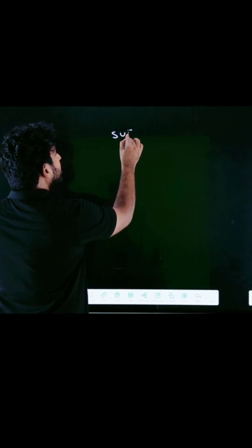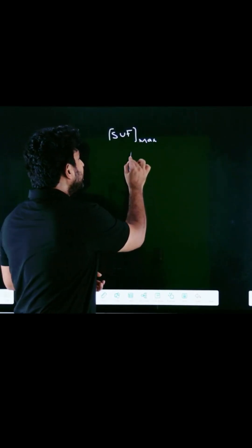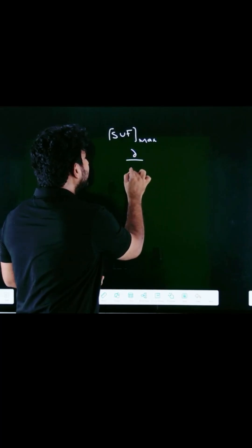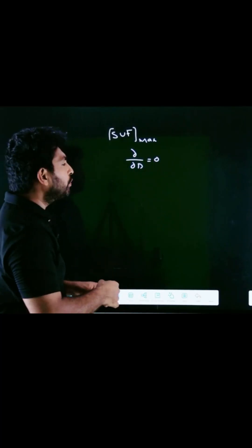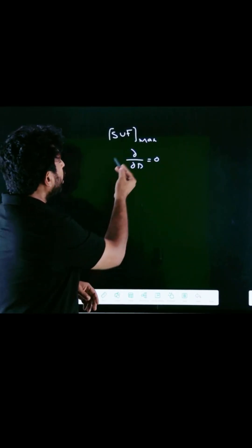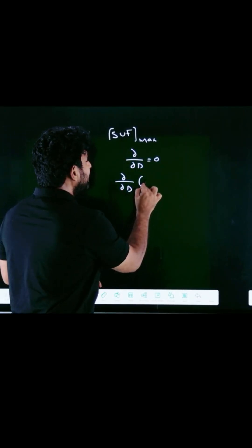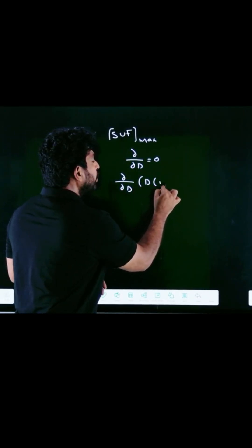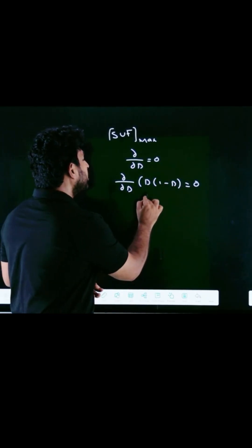To find the maximum switch utilization factor, it is a function of the duty cycle D. Setting the derivative with respect to D equal to zero — that is, d/dD of D times (1 minus D) equals 0 — gives D equal to 0.5.